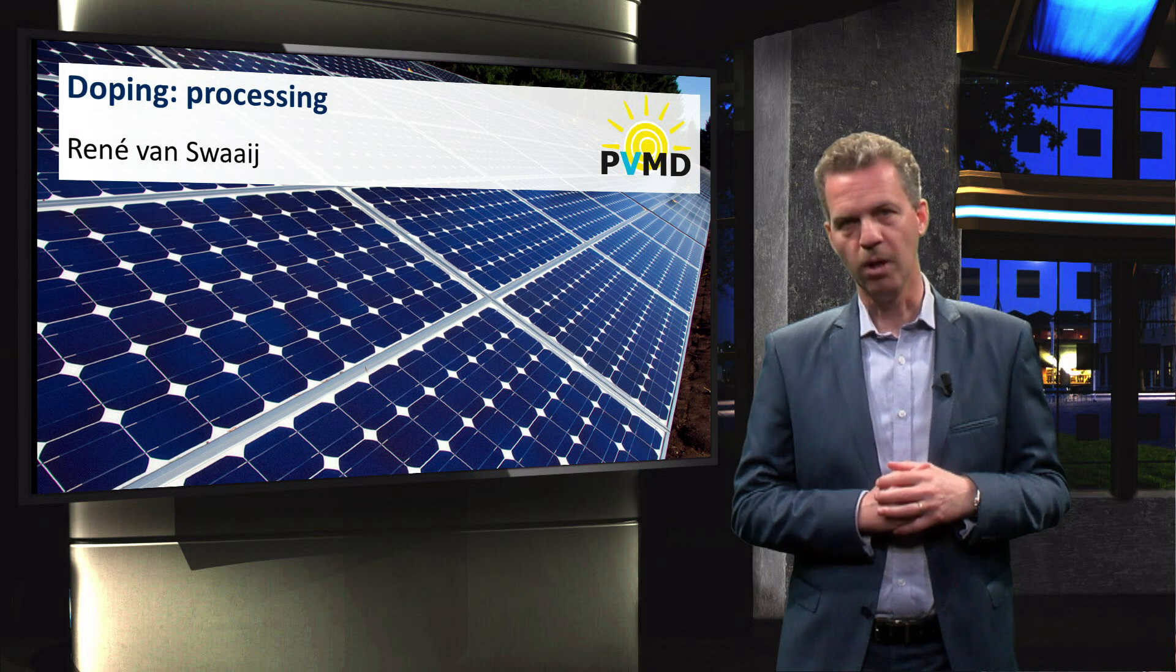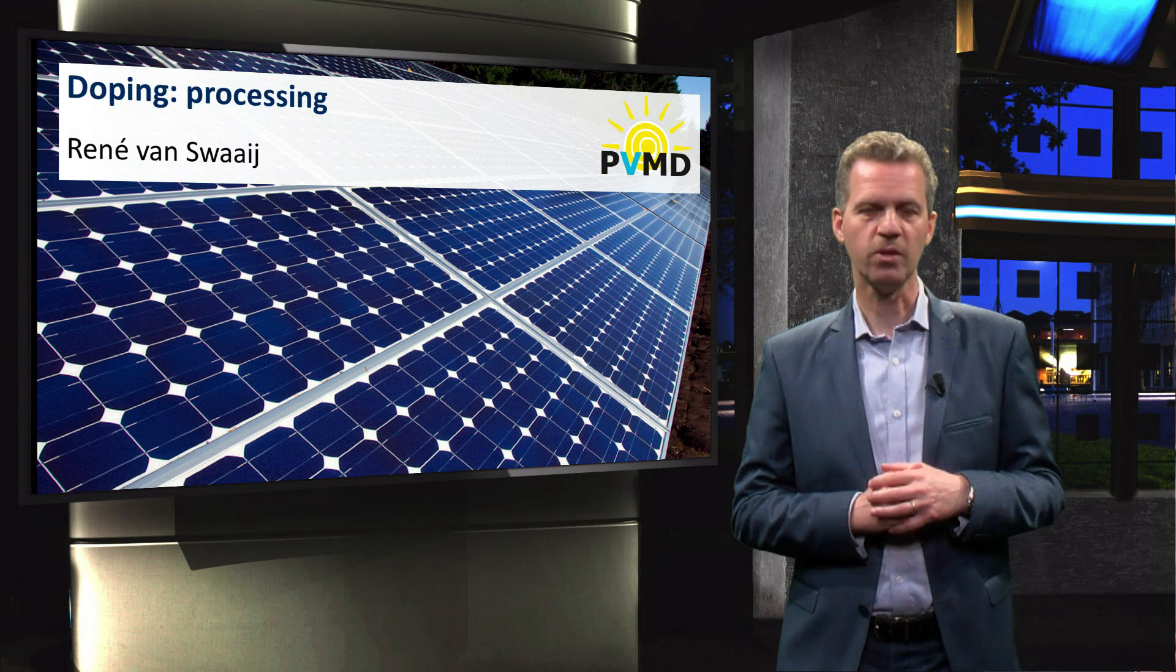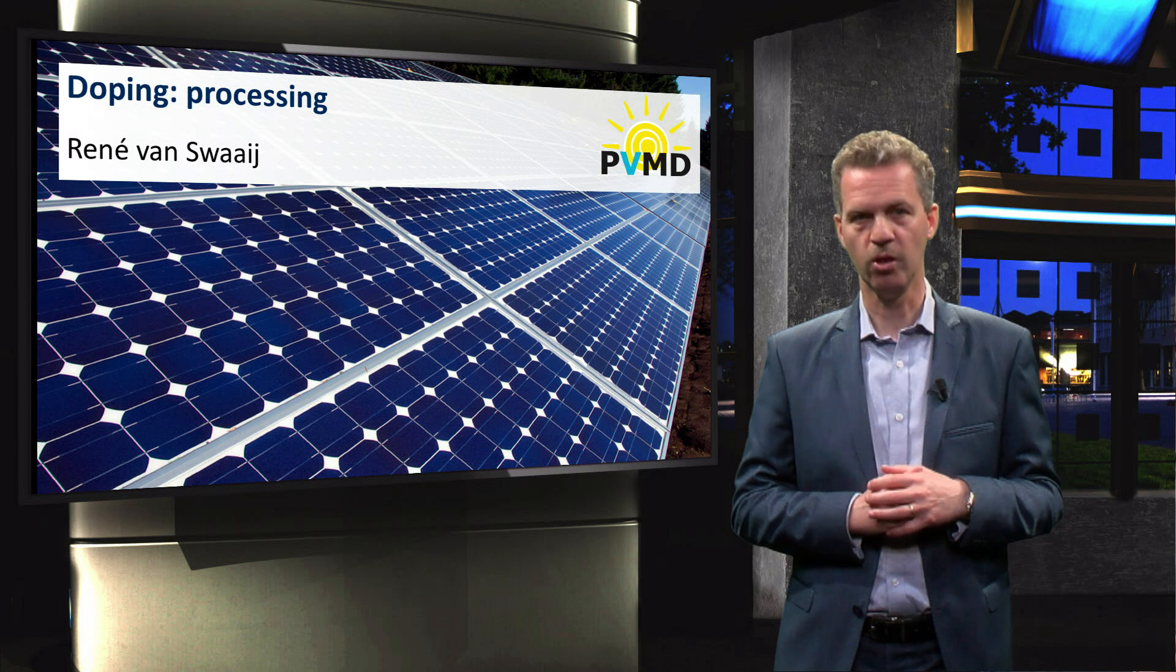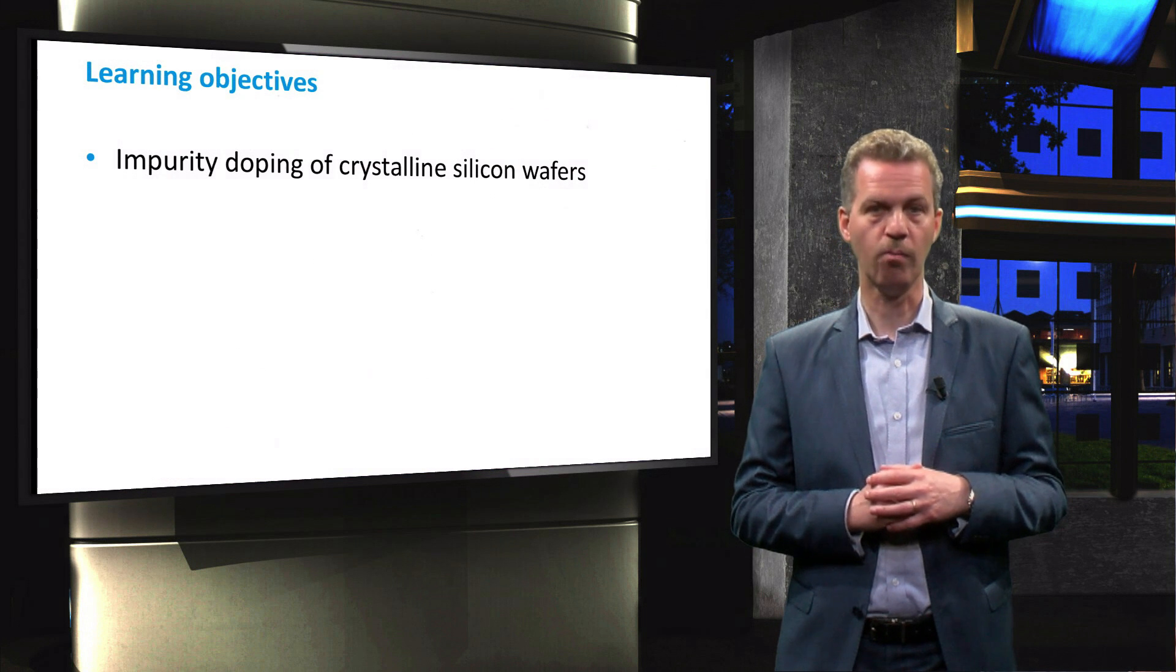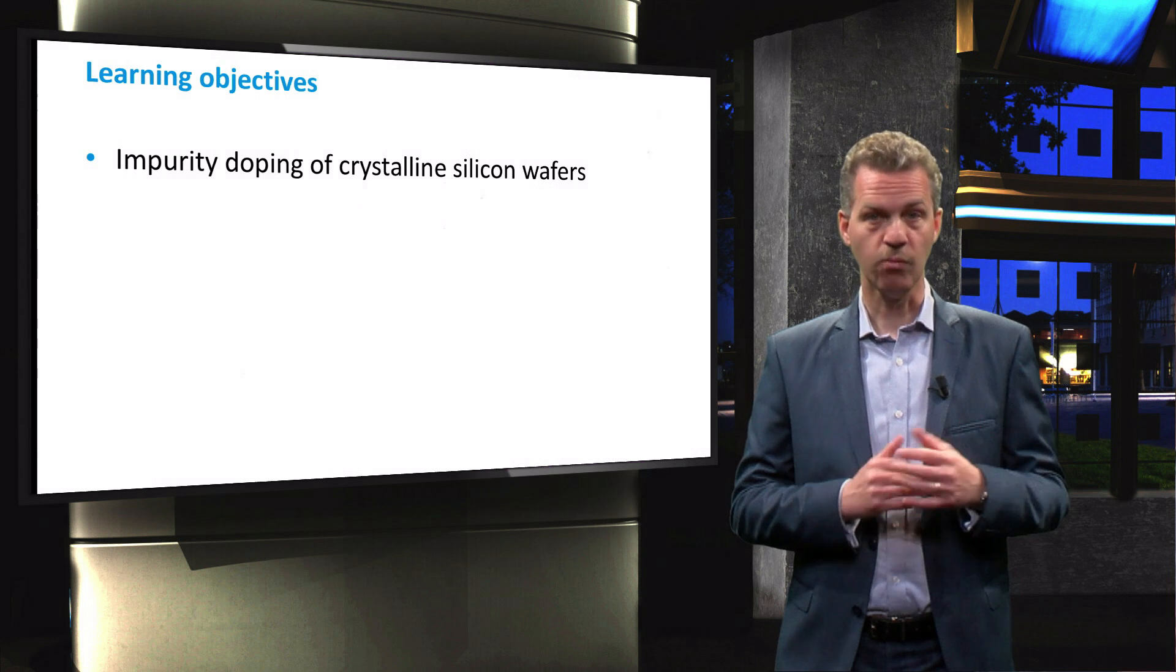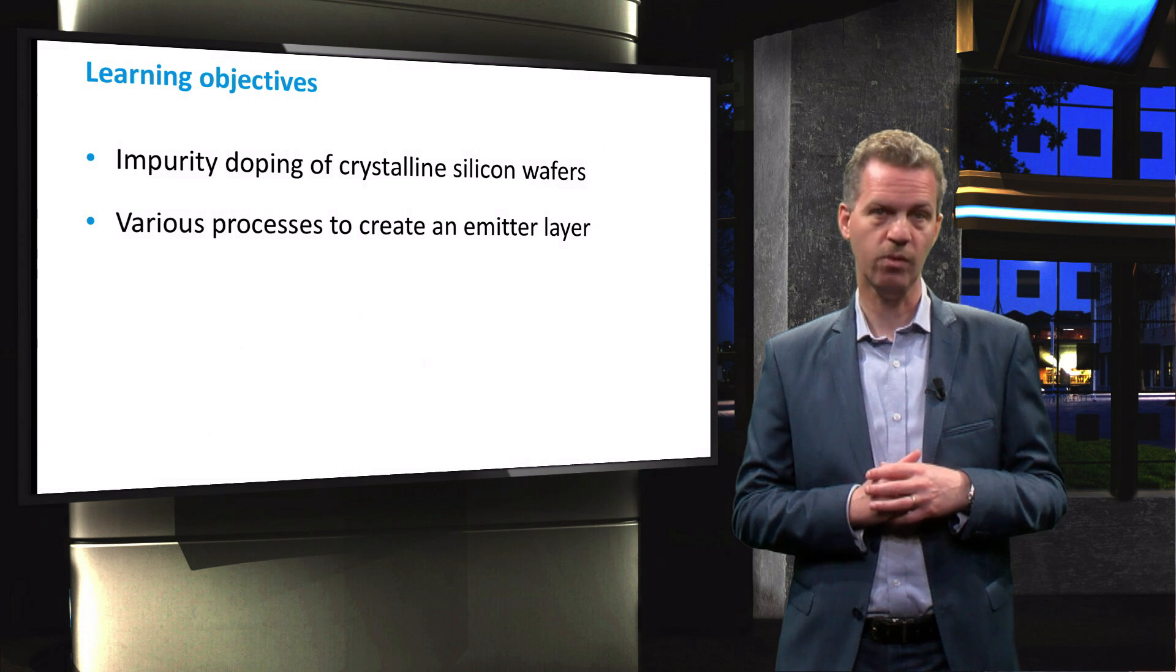Now that we have seen which elements are most commonly used to make extrinsic crystalline silicon with substitutional doping atoms, we will show different techniques to obtain N-type or P-type doped wafers, as well as how emitter doping can be realized.